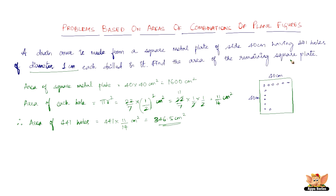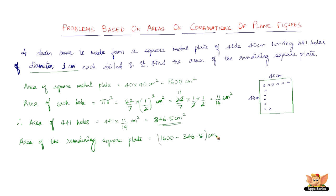Now we need to find the area of the remaining square plate. If we subtract the area of 441 holes, what is the area of the remaining plate? All we have to do is subtract 346.5 from 1600. Therefore, the area of the remaining square plate is 1253.5 cm².